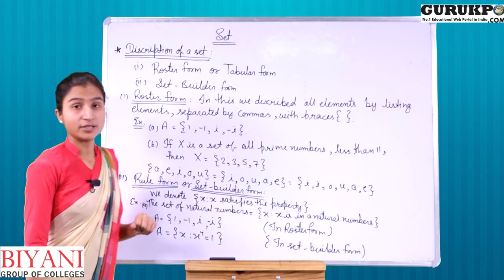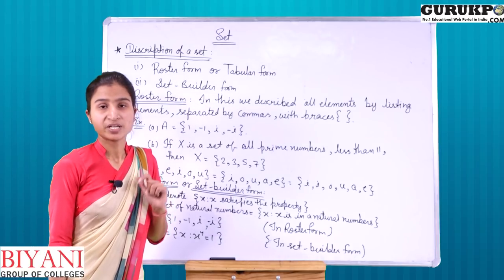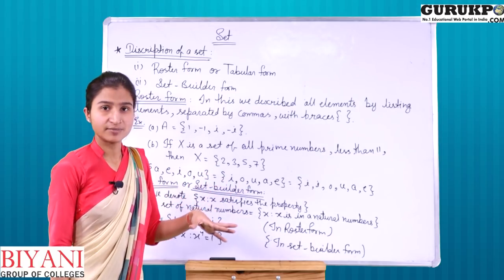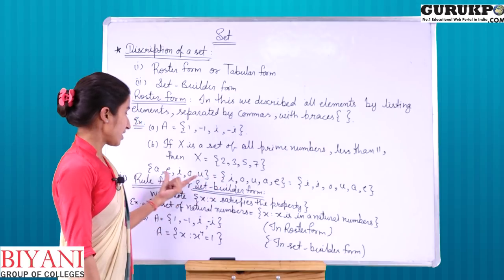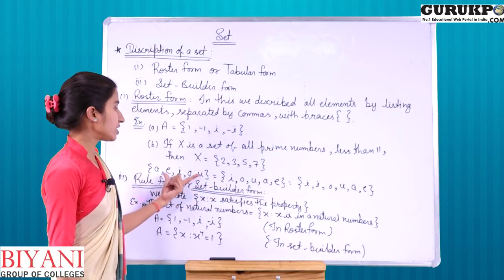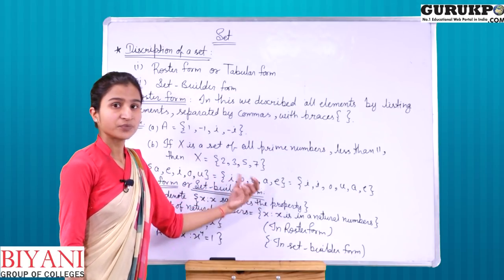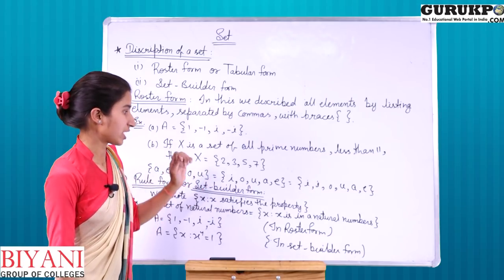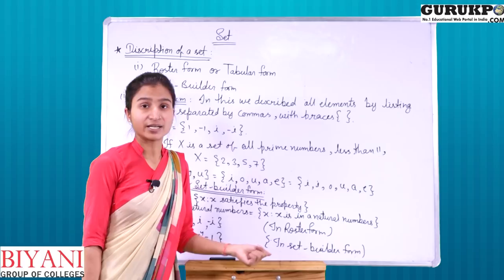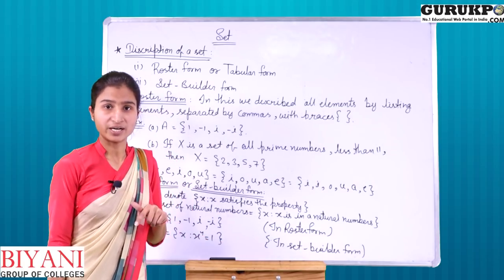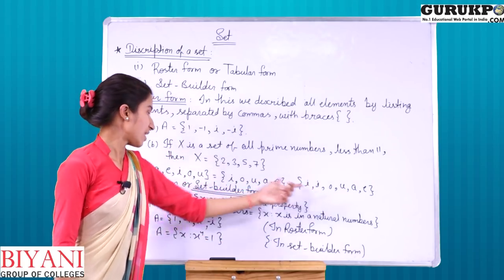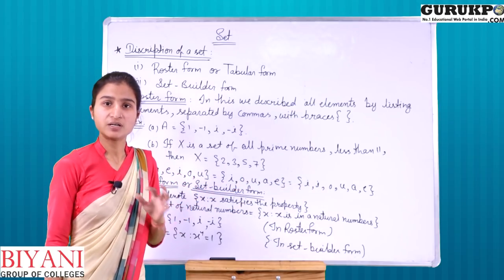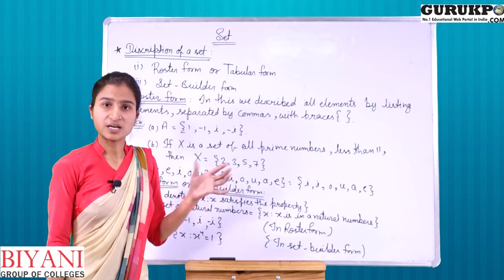And the set of vowels can be written as {a, e, i, o, u}. Any elements can be written as elements of the set. So the set is {a, e, i, o, u}. One important point: in a set, there is no repetition of elements — each element appears only once. The same set written differently is still the same set.